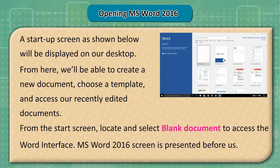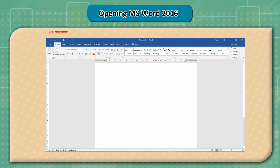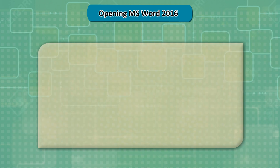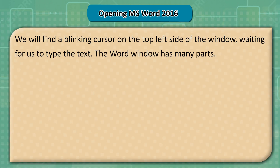The MS Word 2016 screen is presented before us, showing the Quick Access Toolbar, Title Bar, Help, Minimize, Maximize, Close, File Tab, Ribbon, Status Bar, Scroll Bar, Document Area, and Cursor. We will find a blinking cursor on the top left side of the window, waiting for us to type the text. The Word window has many parts.